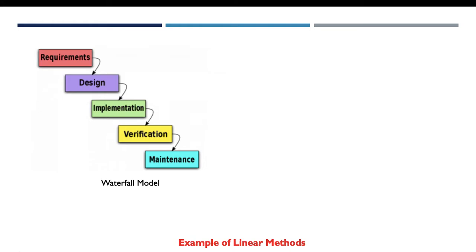As an example of linear methods using the sequential model, we find the waterfall model. This model includes five phases, from the requirements until the maintenance. We have to go step by step in order to generate the final solution, and each phase of this process performs a specific activity.